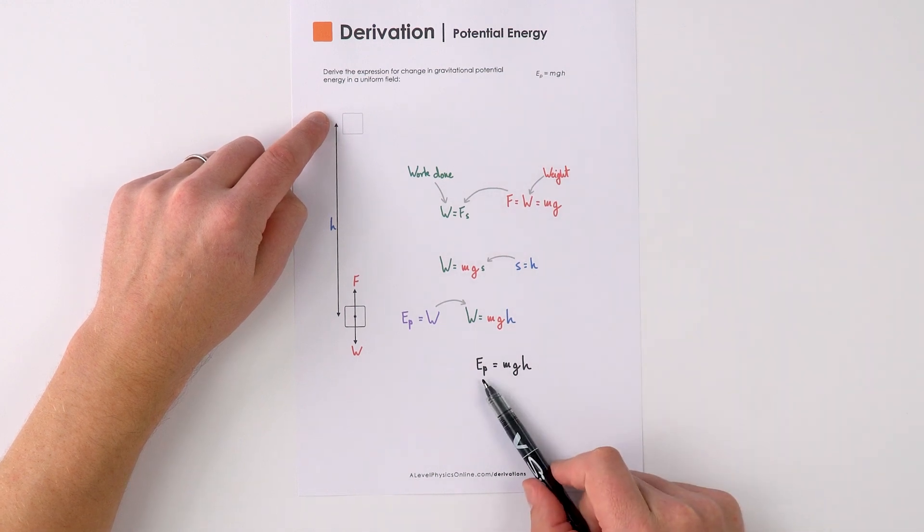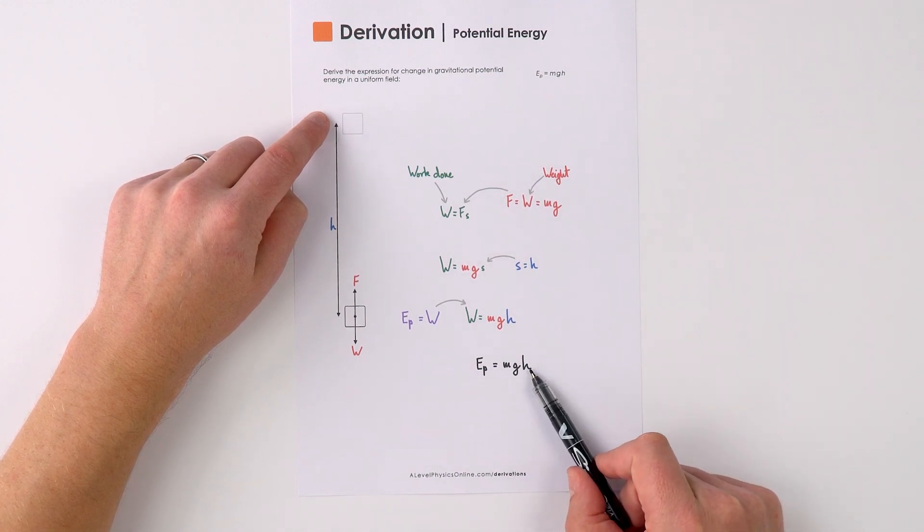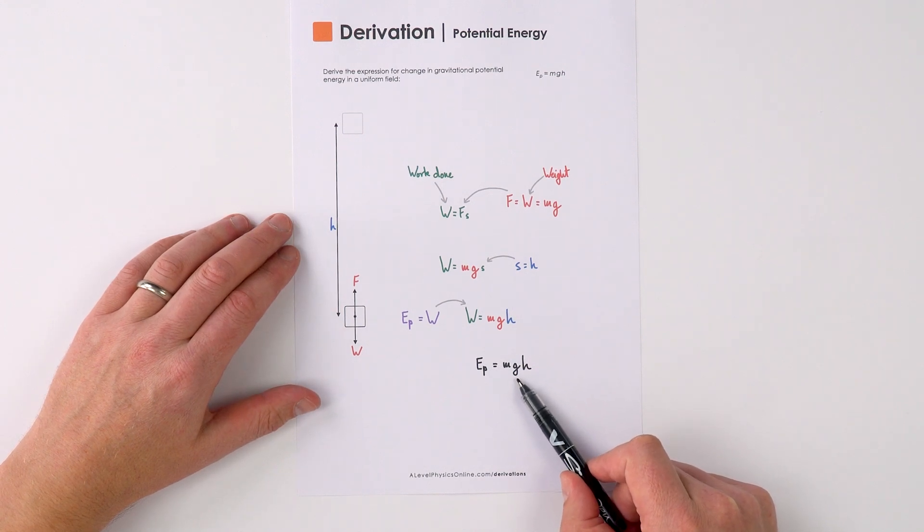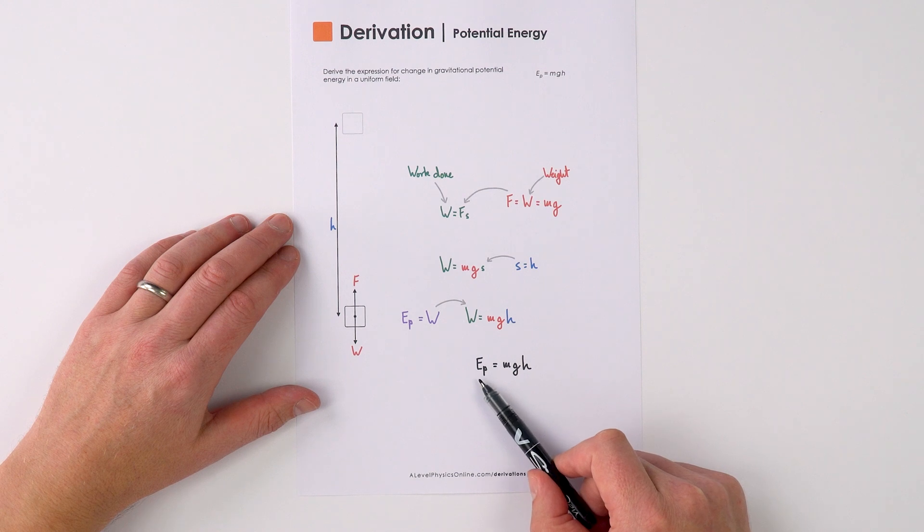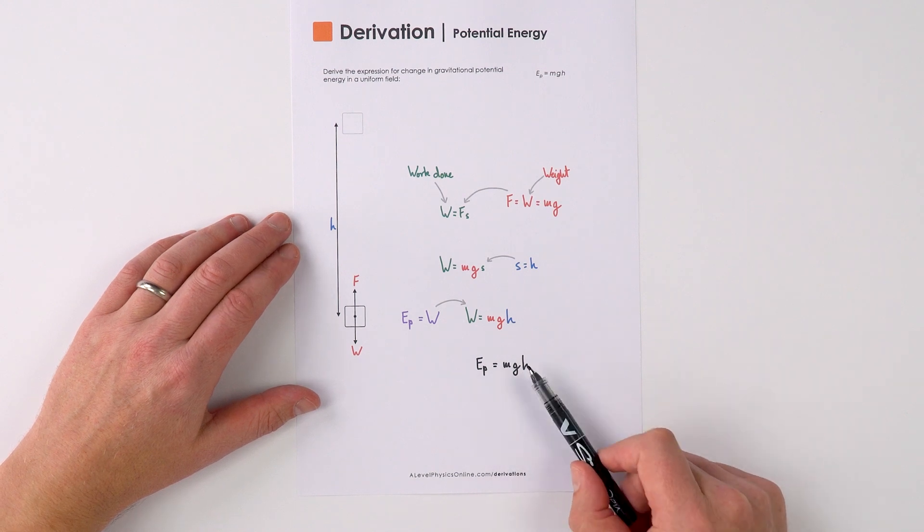Therefore we can say that Ep is equal to mgh and this is for where we have a uniform field so g stays constant, and this is about our change in gravitational potential energy as it goes through a change in height.